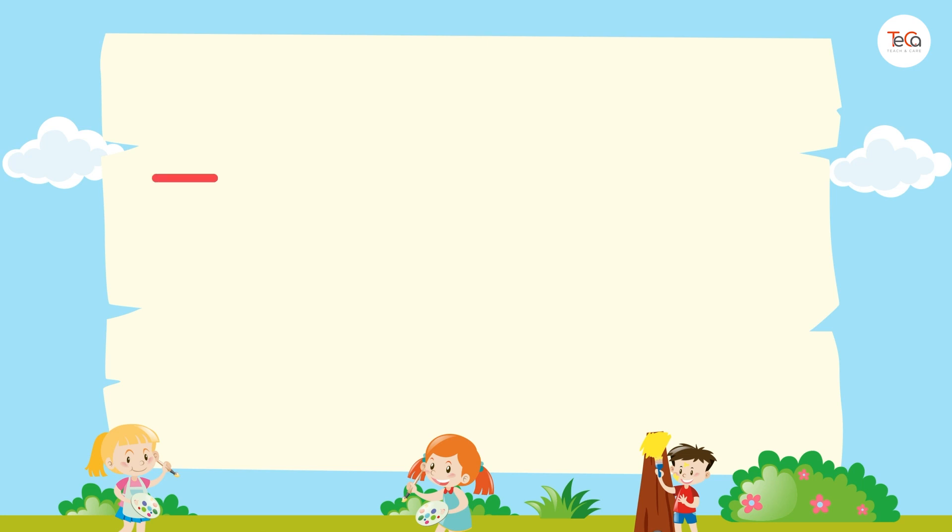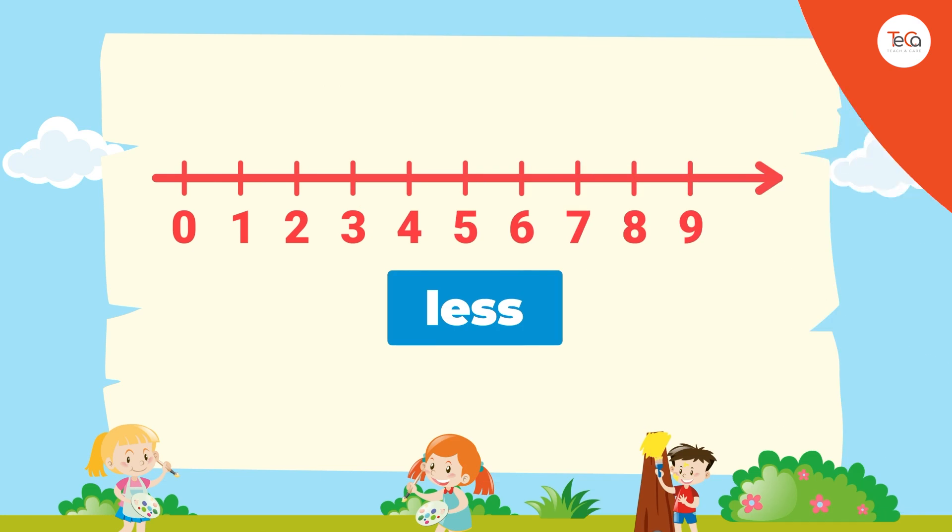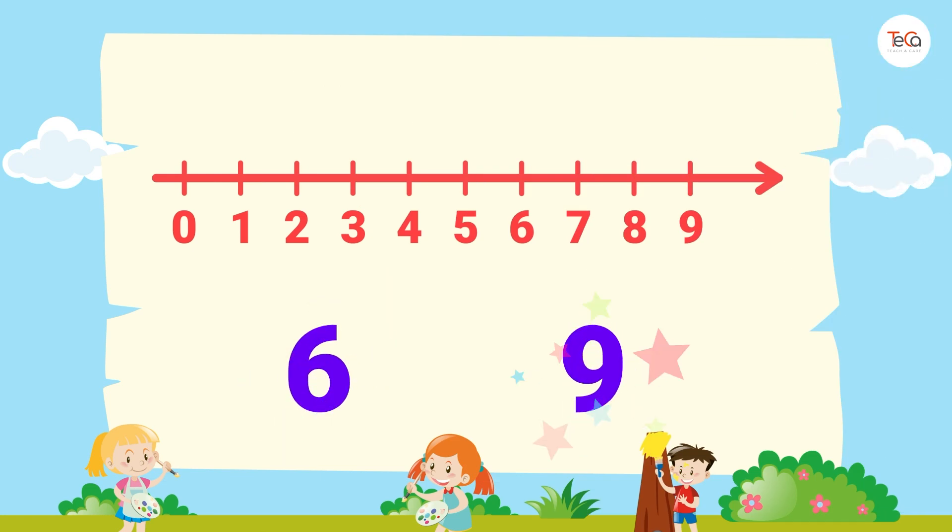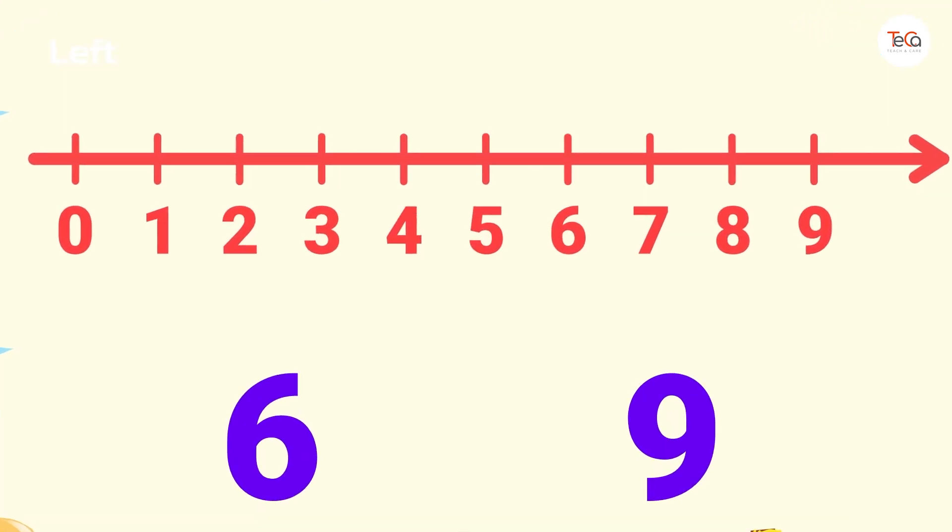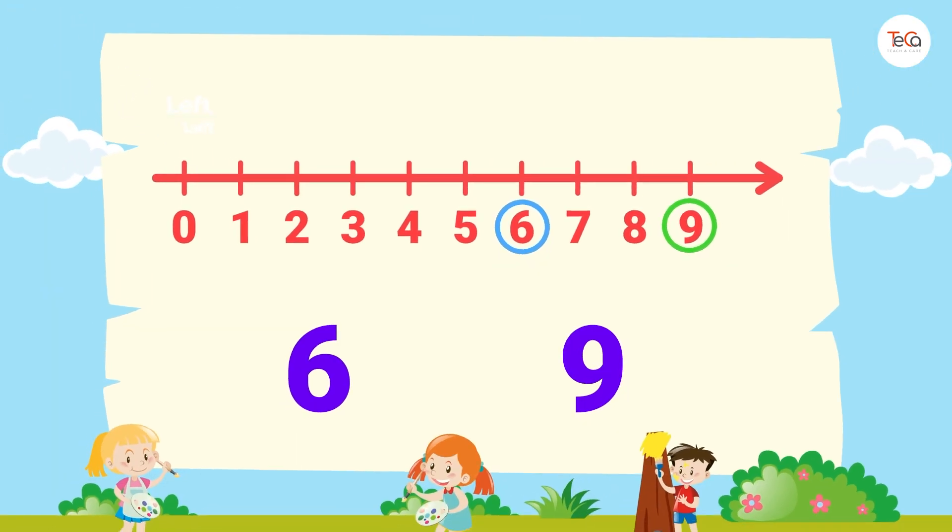Now, use the number line to tell me which number is less. 6 or 9? What's your answer? To find the number that is less, just decide which number is to the left of the other number on the number line. Here, number 6 is to the left of number 9. So, 6 is less than 9.